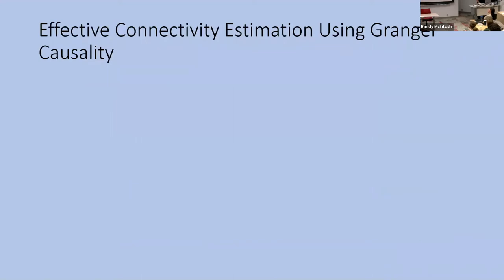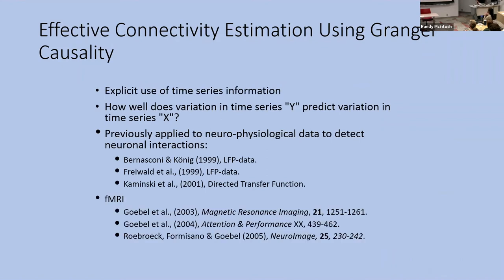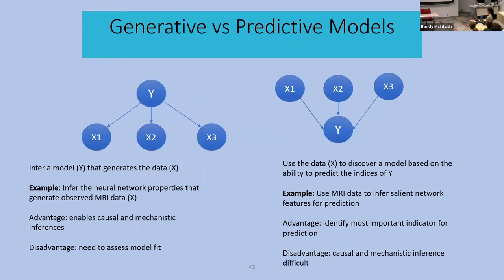Granger causality is another way of measuring effective connectivity — basically a technique looking at time series. It was originally introduced in economics. The idea is: I have time series X and look at its autocorrelations of how it predicts itself in the future, then I add time series Y and ask whether Y gives you more information about what X is going to do in the future. If Y adds to the prediction of X, that suggests a potential causal relationship between X and Y. This can be expanded into multivariate domains and has been used nicely with LFP data, EEG, MEG, fMRI, and spectral data as well.